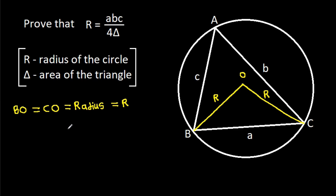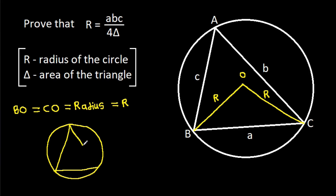Now, in any circle, if any chord is making an angle of theta on the circle, then at the center it will make an angle of 2 theta. So here, if chord BC is making an angle of theta at A, then at point O it will make an angle of 2 theta.